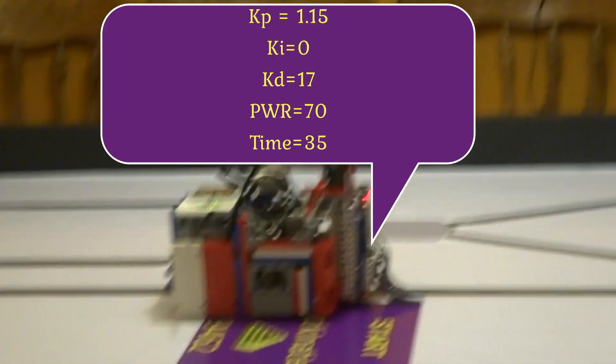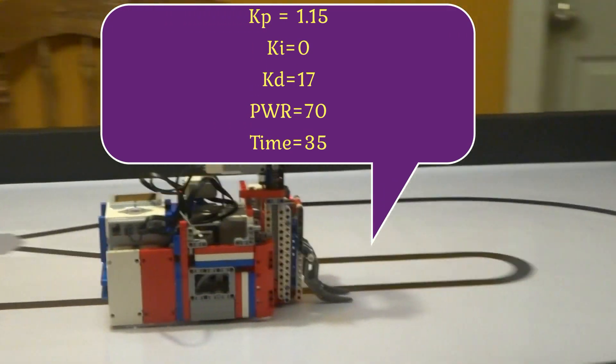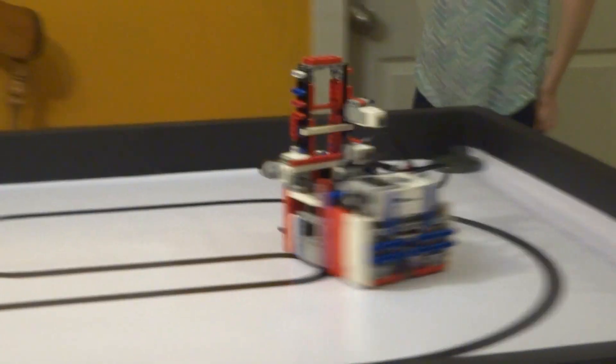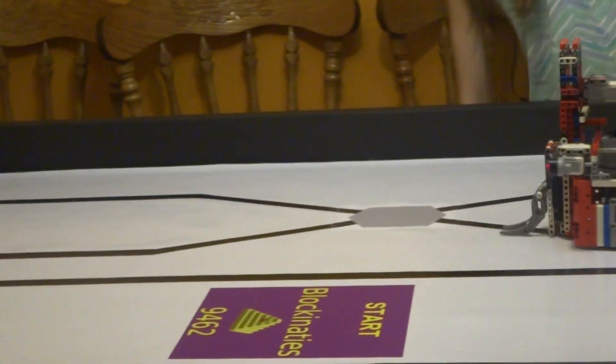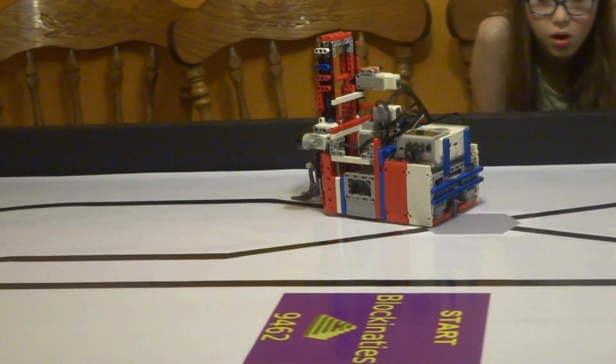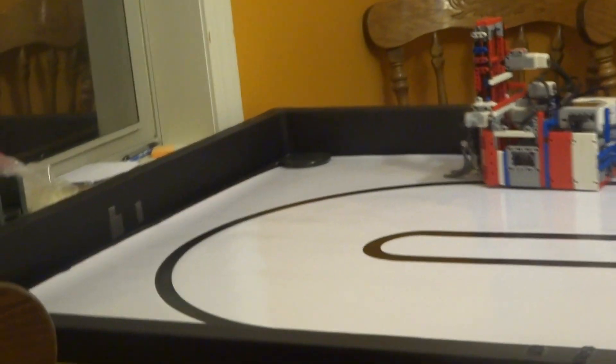Our final values are KP of 1.15, KI is 0, KD of 17, power of 70, and the time was 35.